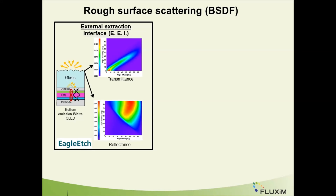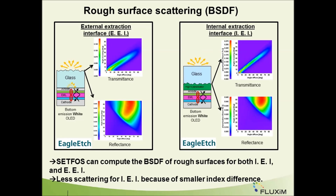Another popular approach to introduce light scattering in OLEDs is to use rough surfaces. In this example, the rough side of the substrate faces the air. But the rough side of the substrate can also face the OLED thin film stack — this is called an internal extraction interface. Most of the time, this rough surface is covered by a planarization layer with a high optical index. In this case, SETFOS can also compute the corresponding BSDF. The reflectance and transmittance are much less broad than when the rough surface faces the air, because the optical contrast between glass and the high-index layer is smaller than between glass and air.